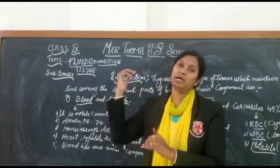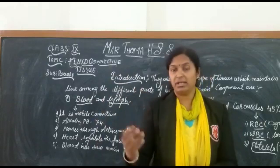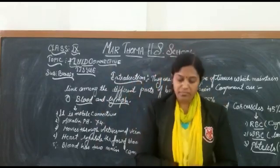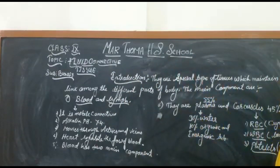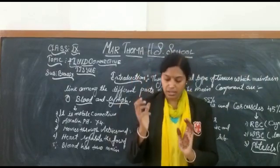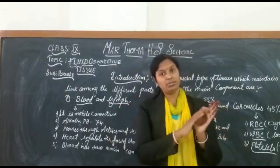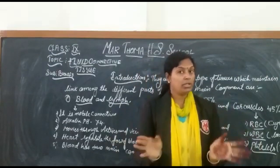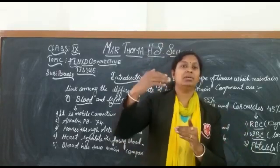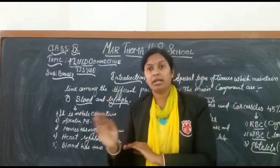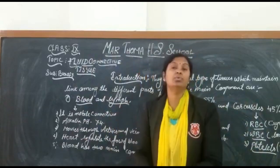WBCs are manufactured in the bone marrow, lymph nodes, and thymus of our body. Next are the platelets, also called thrombocytes. Platelets are small, rounded, and colorless. They are also non-nucleated and may be biconcave in shape. Similar to RBC, platelets also do not contain a nucleus.